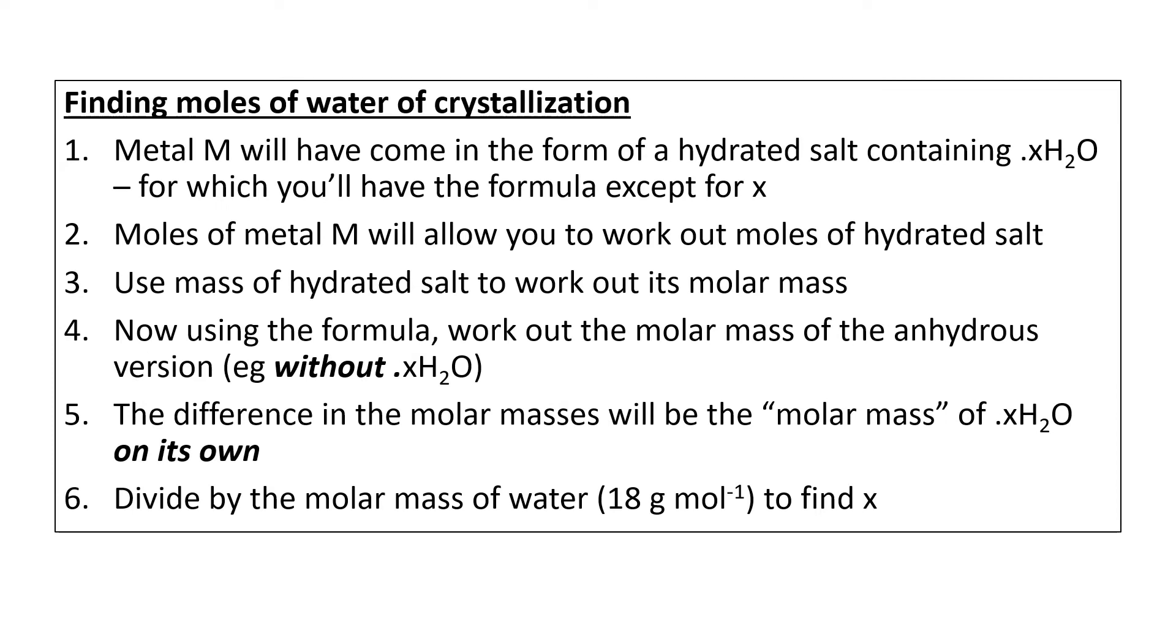So what we're going to look at is how to find moles of water crystallisation. So the metal will come in the form of a hydrated salt, and you'll have the formula except for what the value of x is. That's what the question will want you to do. Moles of metal M will allow you to work out the moles of hydrated salt because usually the equation of the hydrated salt will tell you how many moles of metal are there. So if it's FeSO4·7H2O, for example, one mole of hydrated iron sulfate will be the same as one mole of iron.